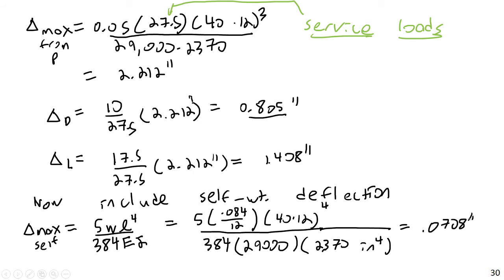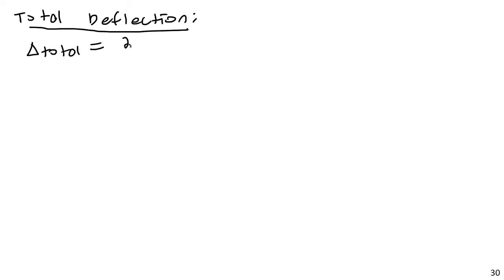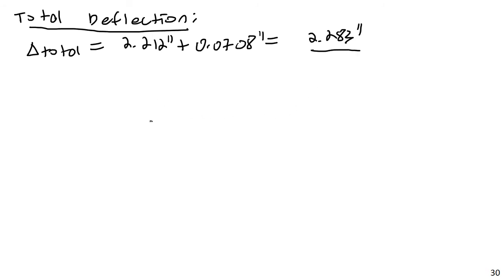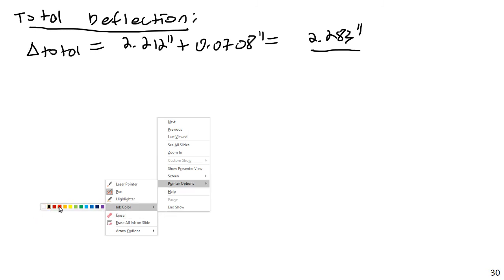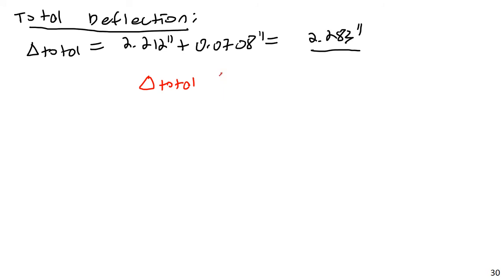The total deflection is delta_total = 2.212 plus 0.0708 = 2.283 inches. Now, delta_actual must be less than or equal to delta_allowable. Checking two common criteria: L over 240 gives (40 times 12) divided by 240 = 2.0 inches, and the more stringent L over 360 gives 1.33 inches.